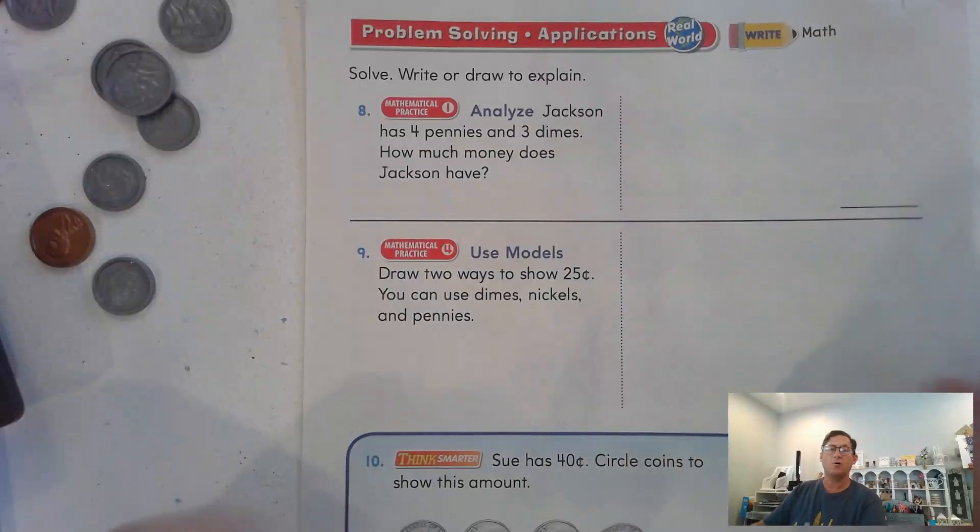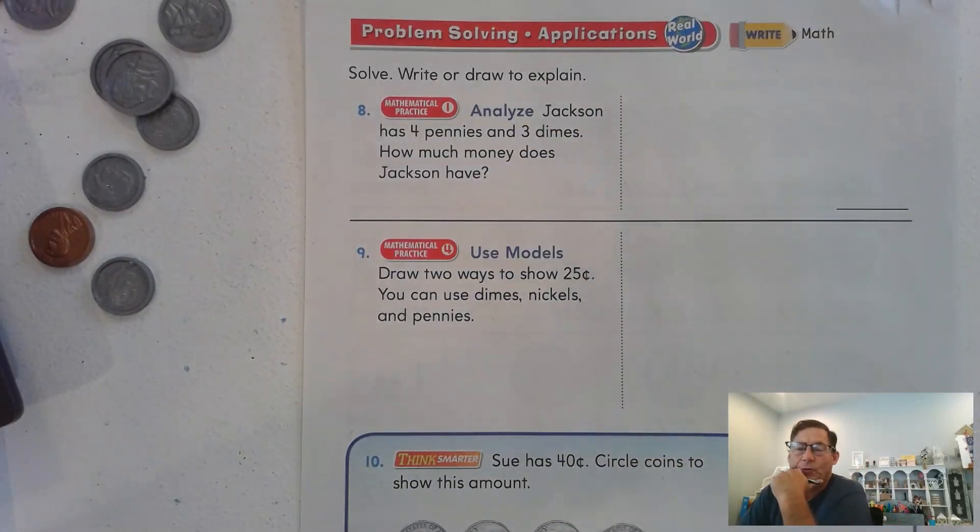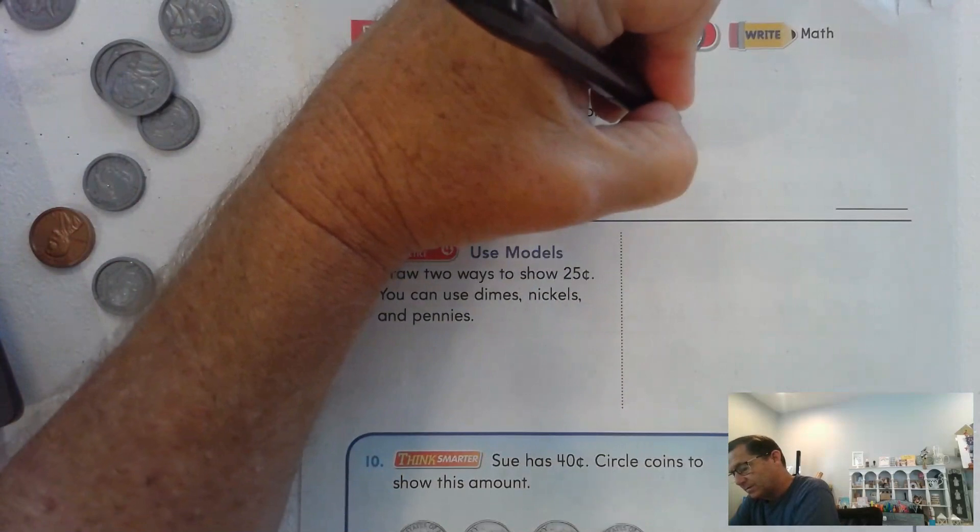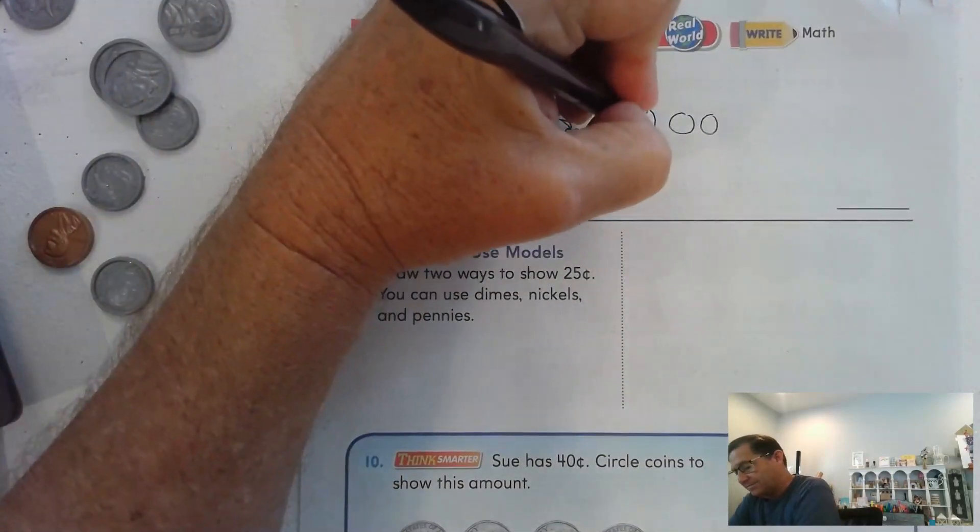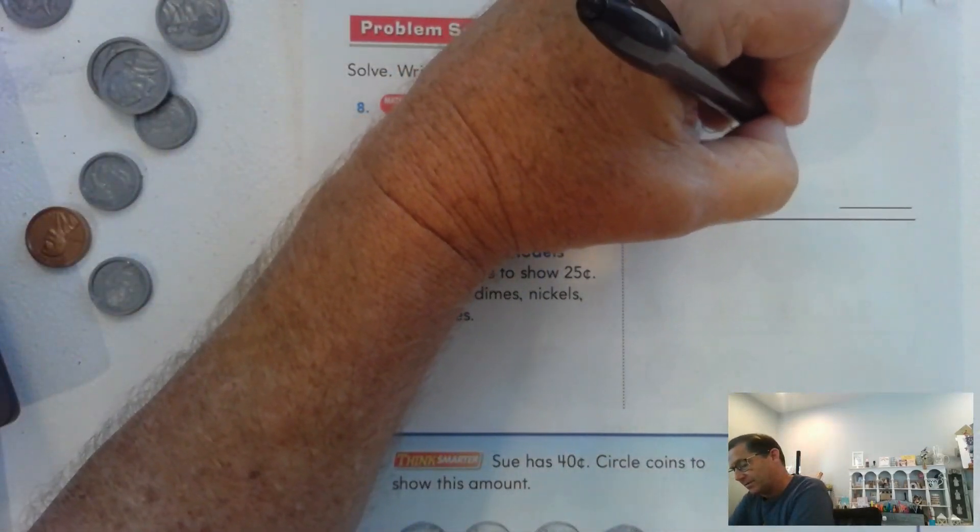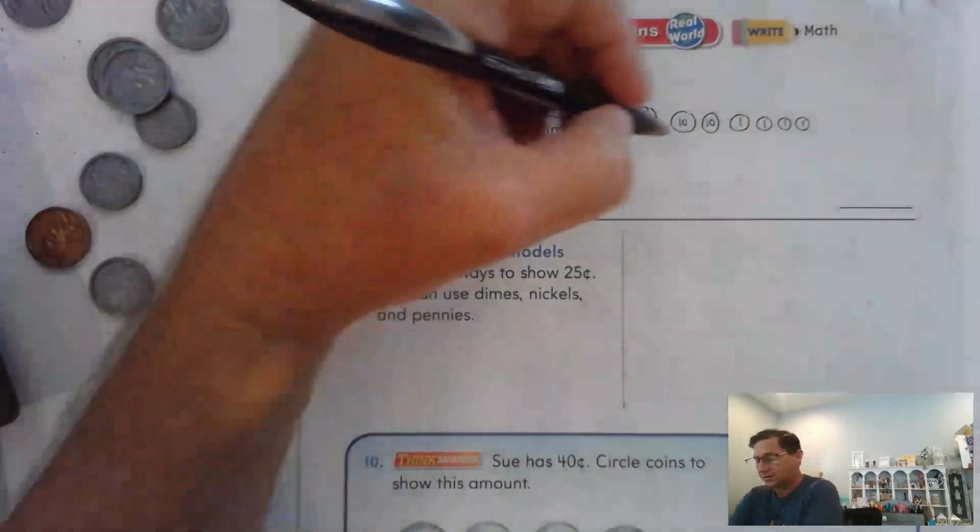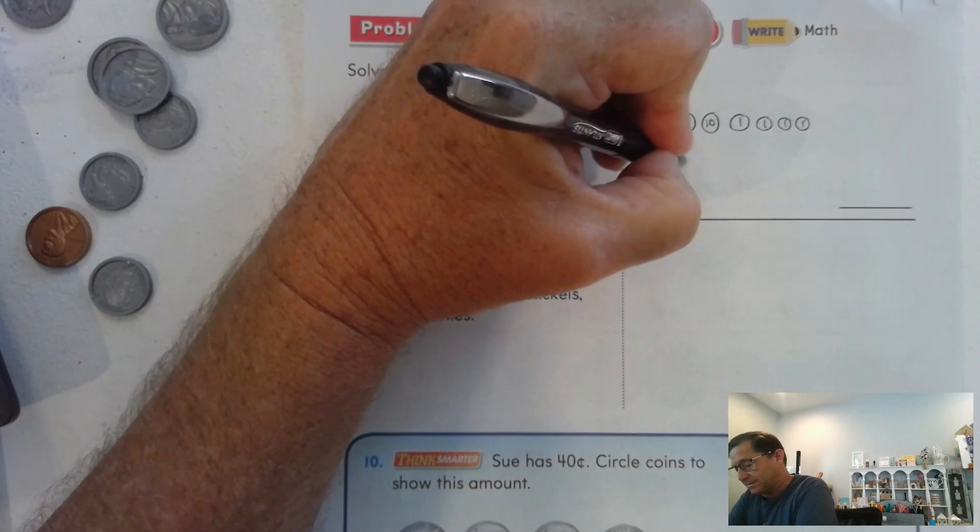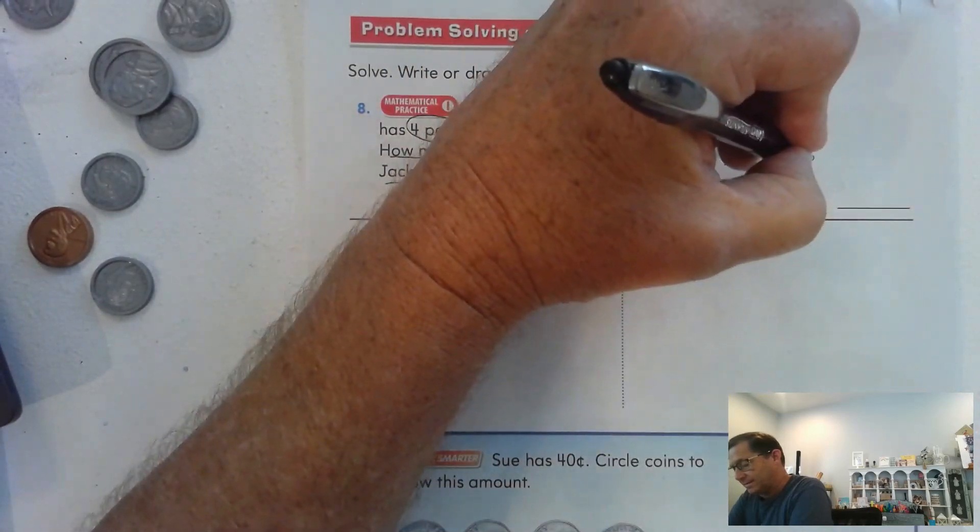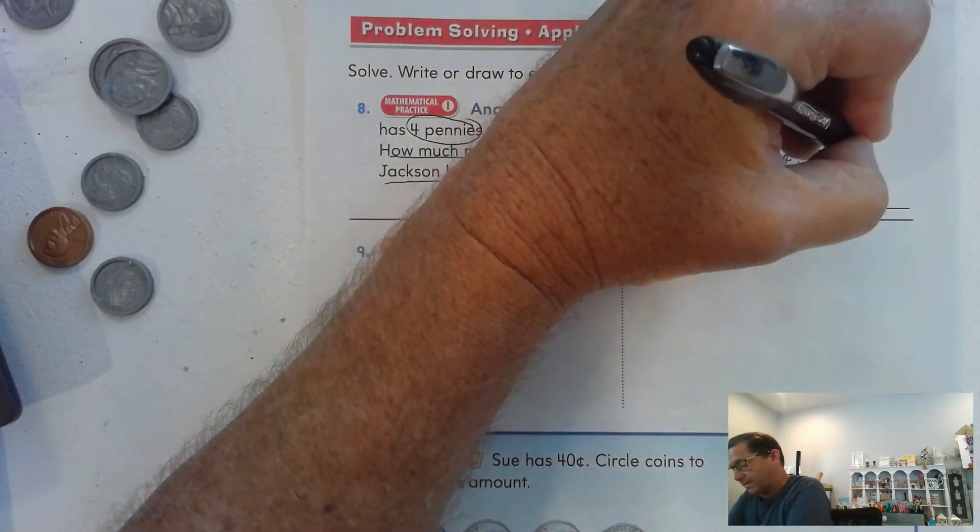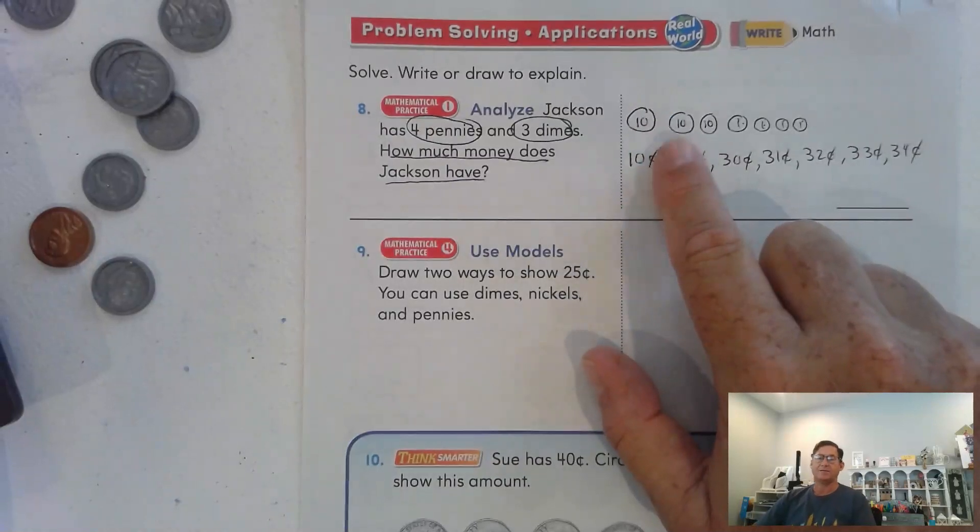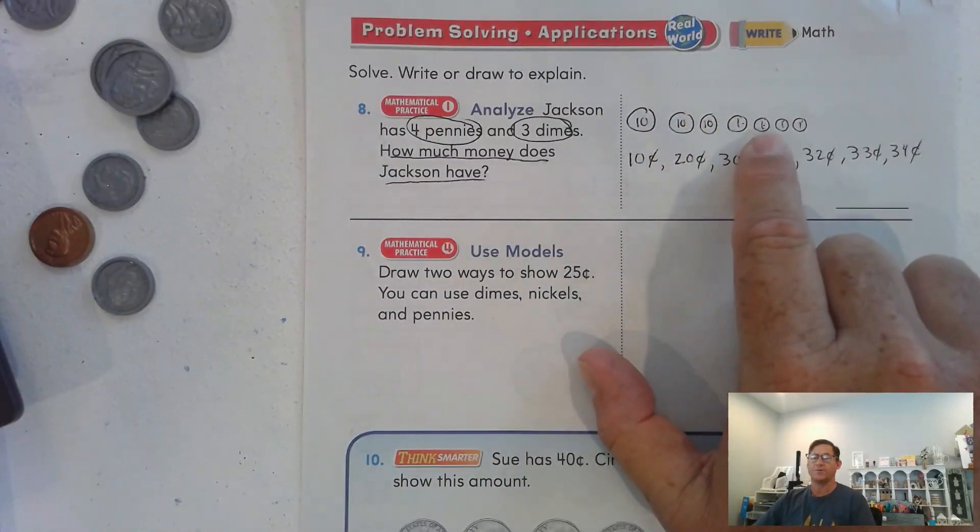Number eight: Solve, write, or draw to explain. Jackson has four pennies and three dimes. How much money does Jackson have? Let's draw the three dimes. Each dime is worth ten cents. He also has four pennies, and each penny is worth one. So he has ten cents, twenty cents, thirty cents, thirty-one, thirty-two, thirty-three, thirty-four. He has thirty-four cents.